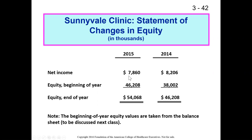For a not-for-profit, net income equals retained earnings because they can't pay dividends. We simply take the net income, add it to the equity at the beginning of the year, and that gives us the equity at the end of the year. Equity is the portion of the value of the organization owned by shareholders, or in the case of a not-for-profit, owned by the entity itself.